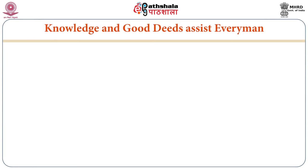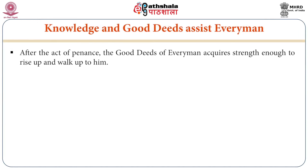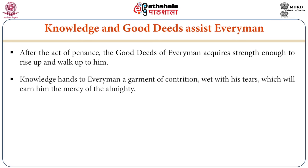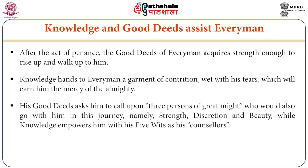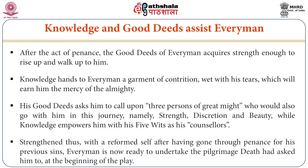After the act of Penance, Good Deeds acquires enough strength to rise up and accompany him. Knowledge hands Everyman a garment of contrition, wet with his tears, which will earn him the mercy of the Almighty. Good Deeds asks him to call upon three persons of great might — Strength, Discretion, and Beauty — while Knowledge empowers him with Five Wits as his counsellors. Strengthened thus and having gone through penance for his previous sins, Everyman is now ready to undertake the pilgrimage.